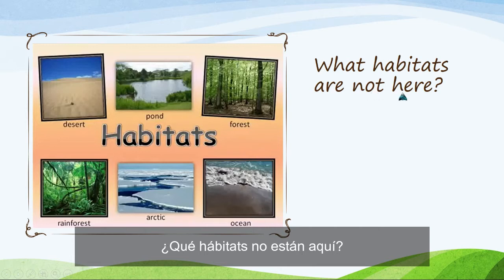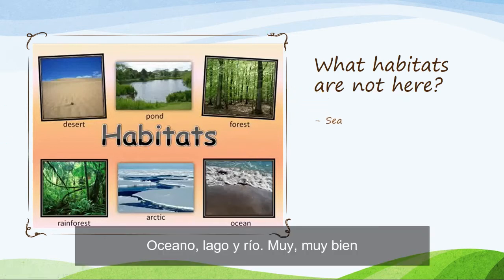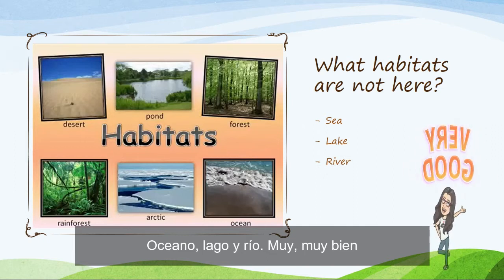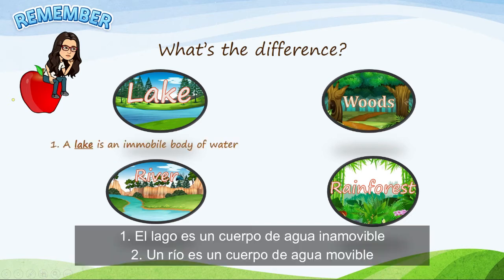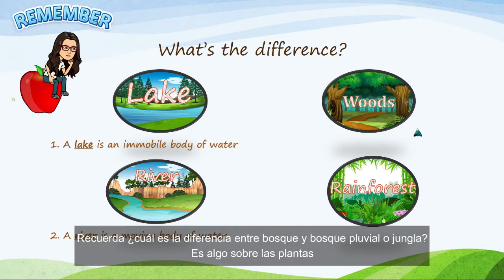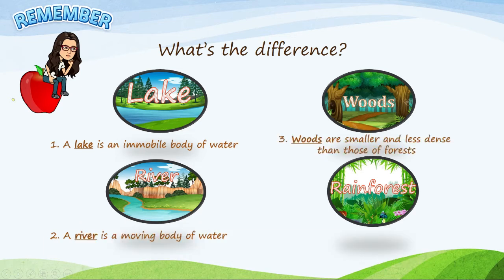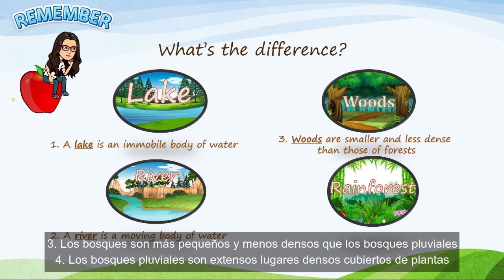What habitats are not here? Sea, lake, and river. Very good. Remember: what is the difference between lake and river? It's about movement — a lake is an immobile body of water; a river is a moving body of water. What is the difference between woods and rainforest? It's about plants — woods are smaller and less dense than forests; rainforests or jungles are extensive and dense places covered with plants.